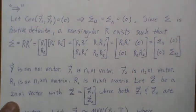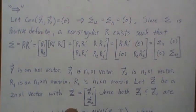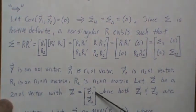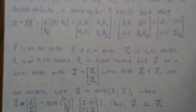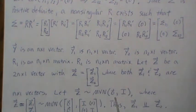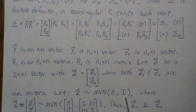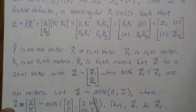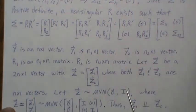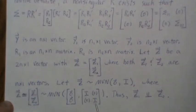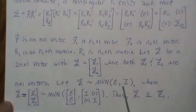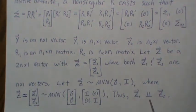Let z be a 2n by 1 vector partitioned into z1 and z2, each n by 1. Let z be distributed as multivariate normal with mean zero and variance-covariance matrix I. This immediately tells us every component of z has covariance zero. Since z can be partitioned into z1 and z2, each follows a multivariate normal with mean zero and identity covariance, and thus z1 is independent of z2.